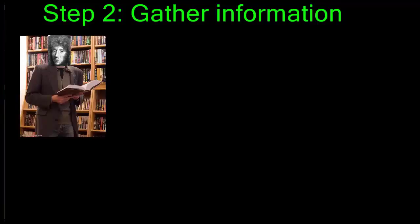Step two of the scientific method involves gathering information or doing research. You might go on the internet and do some research on a reputable web page in order to find information to answer your question. But in Francesco Redi's time, he couldn't go on the internet, so he might have to do some reading or perhaps go into the field and do his own research.